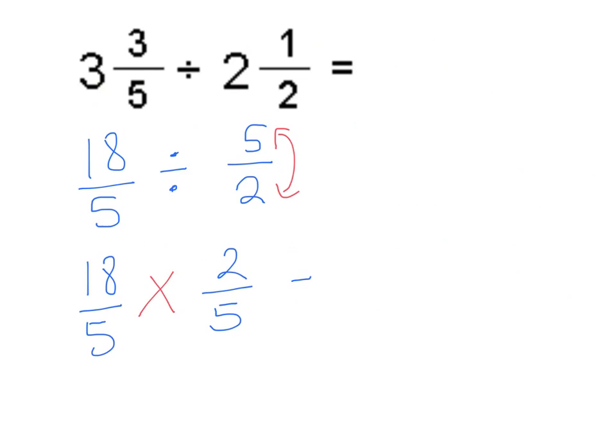So it's nice and simple: 18 times 2 gives us 36, 5 times 5 gives us 25, and I think we'll just leave it like that for just now. You could change that into a mixed number if you wanted, but I think I'm just going to leave that there just now at 36 over 25.